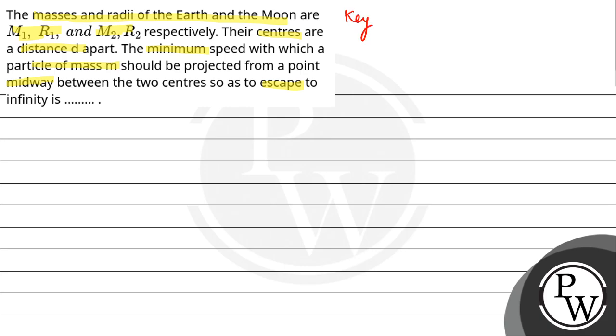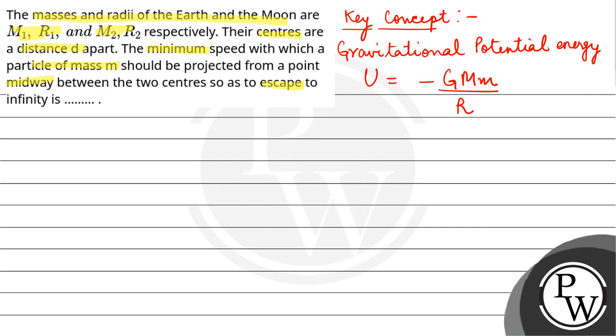Here our key concept is gravitational potential energy which is U equals minus GMm upon R. Where G is the gravitational constant, M is the mass of body which we consider Earth or Moon, and small m is the mass of the particle.